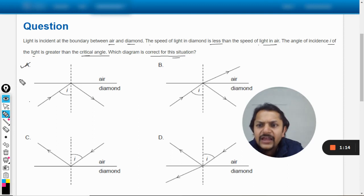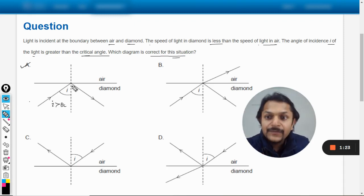That is what is happening in A, isn't it? Like I is greater than theta critical, it becomes the case of TIR. The light is going there, it will not be able to pass through it and it will go down. So A is definitely correct.